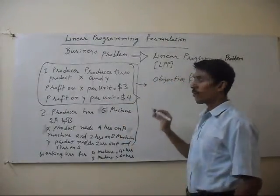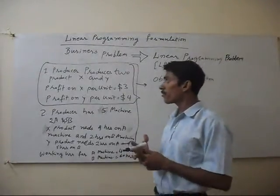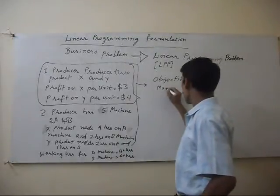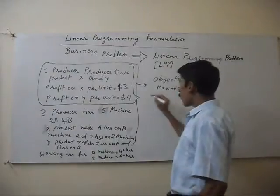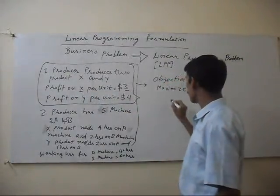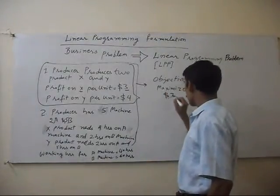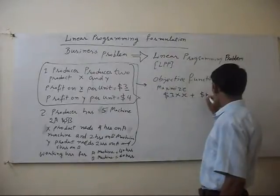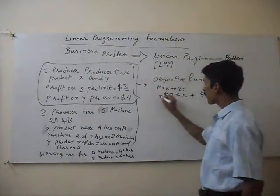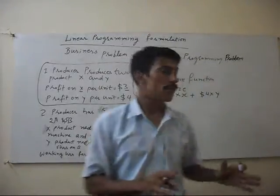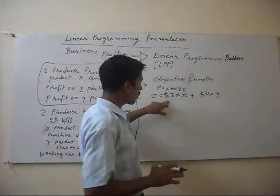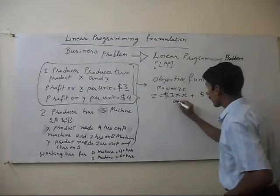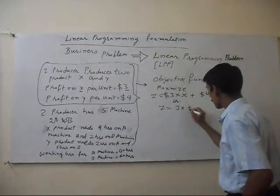It means we have to produce two products and the unit profit of each product is given. So we have to maximize profit into number of units. This gives us Z = $3 × X + $4 × Y. Z is the total profit. If we multiply quantity by profit margin, we can calculate total profit, so we have to maximize this. Or we can write Z = 3X + 4Y.